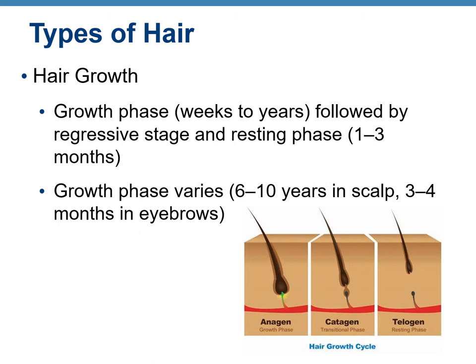Hair growth occurs in three major phases: anagen (growth phase, lasting weeks to years), catagen (regressive stage), and telogen (resting phase, lasting about one to three months). The length of the growth phase varies — from 1–6 years on the scalp to just three to four months for the eyebrows.